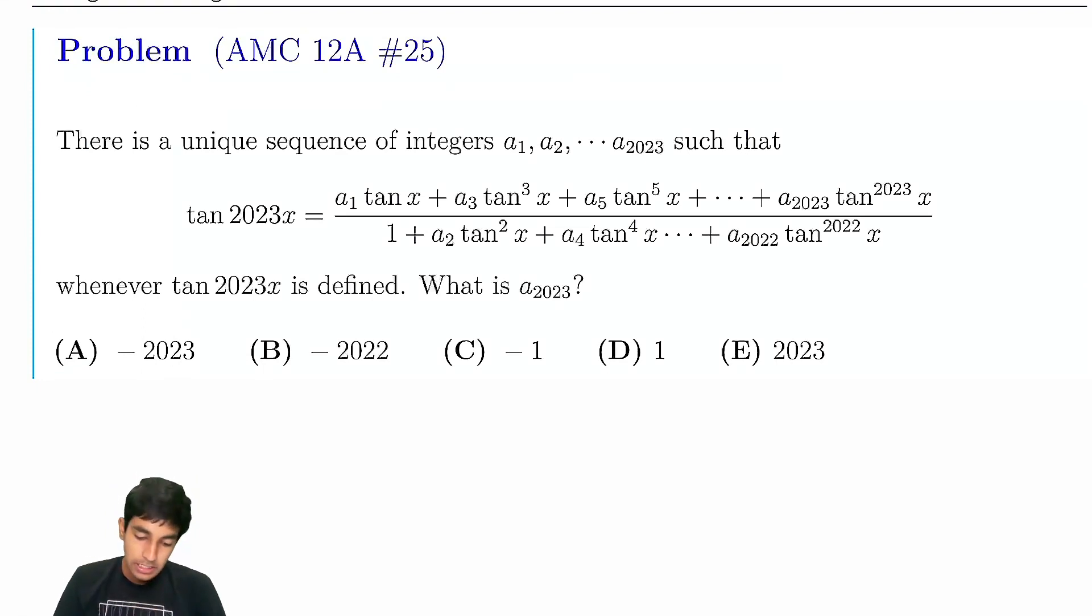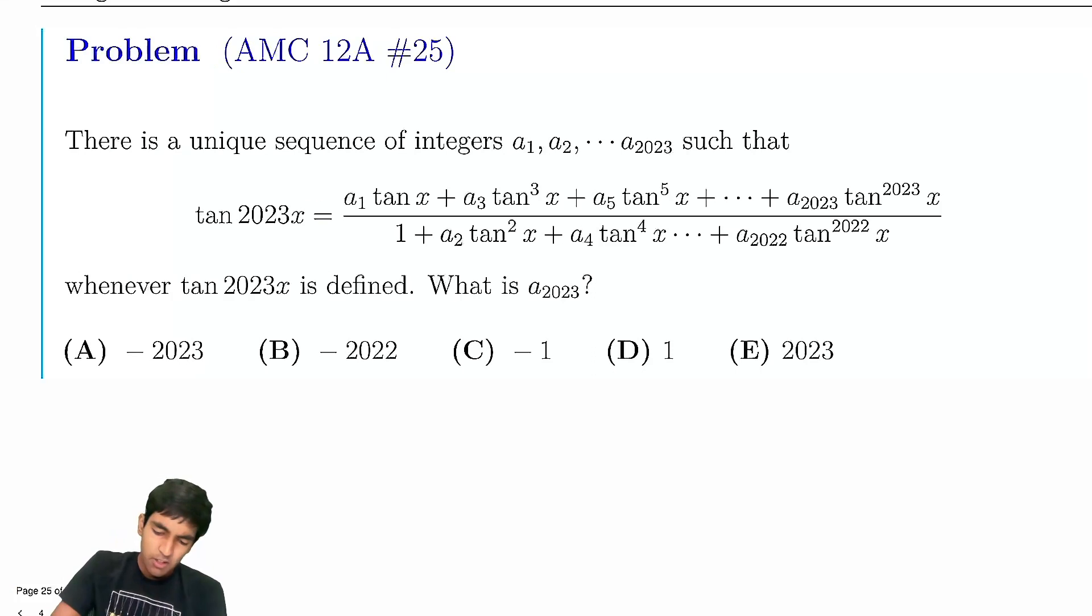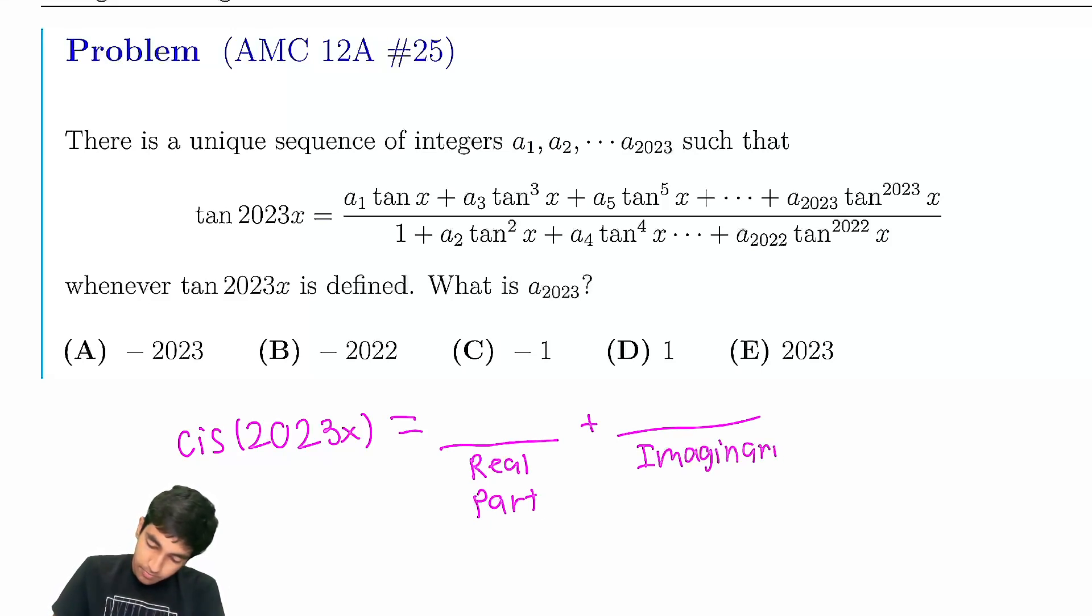Why complex numbers? Because when we use complex numbers, it's much easier to find trig relations. You can keep using the identities, you can probably get some conclusion there, but complex numbers is more natural, because if, let's say we have cis of 2023x, right, cosine of this plus i sine of this. Well, basically, this is going to have some real part, and then it's also going to have some imaginary part, i.